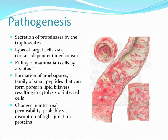How does this happen? The organism is able to produce proteinases. It can also kill cells by a contact-dependent mechanism, induce apoptosis, and causes amoeba pores — a family of small peptides that can destroy the lipid bilayers, causing cytolysis. It can also increase the permeability of the gut through disruption of the tight junction proteins.